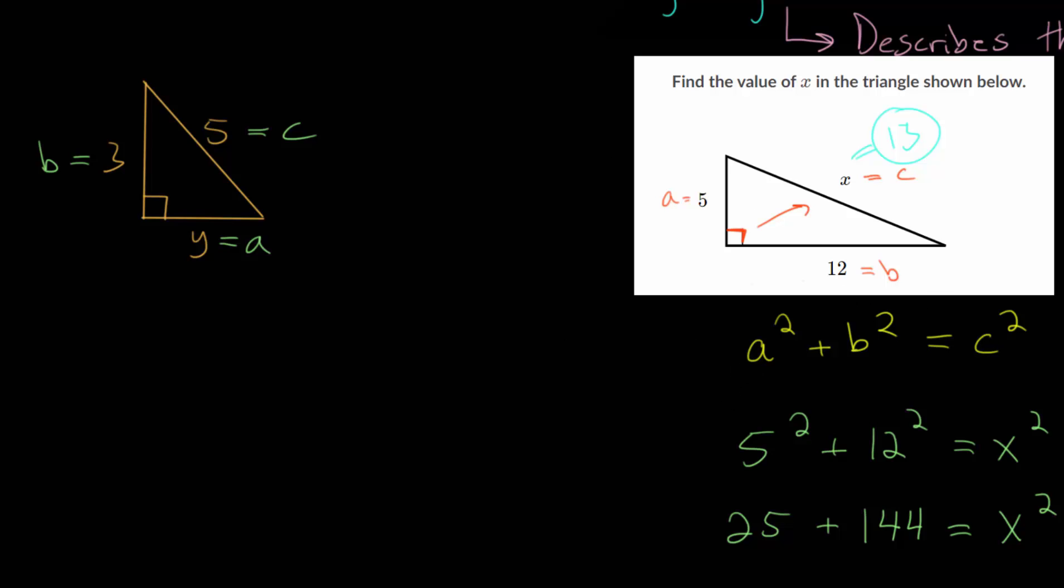So let's plug everything in now. We have A squared, so that's Y squared, plus B squared, which is 3 squared. And this is equal to C squared, and C is 5.